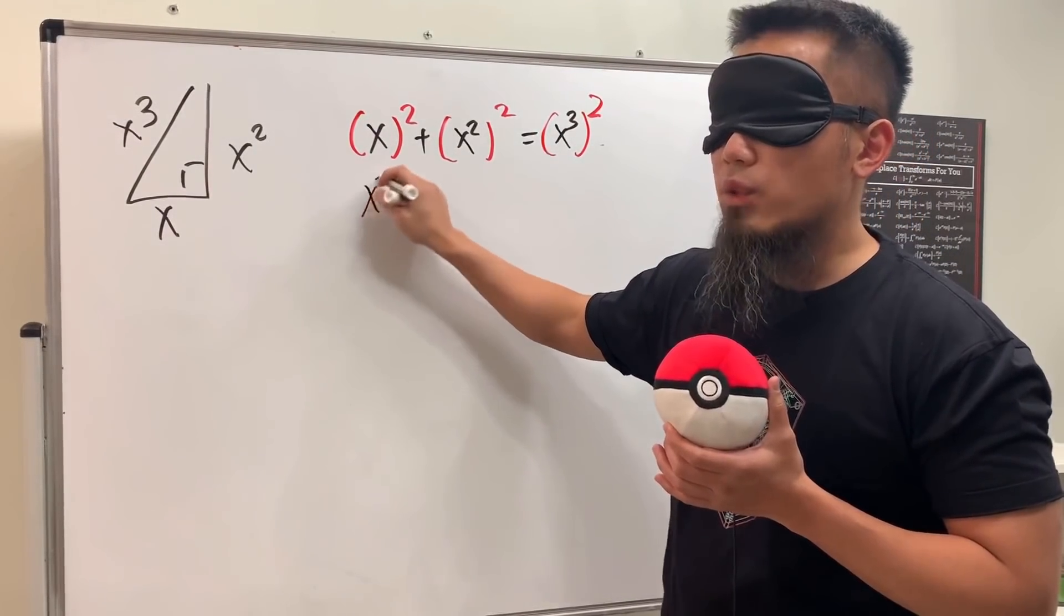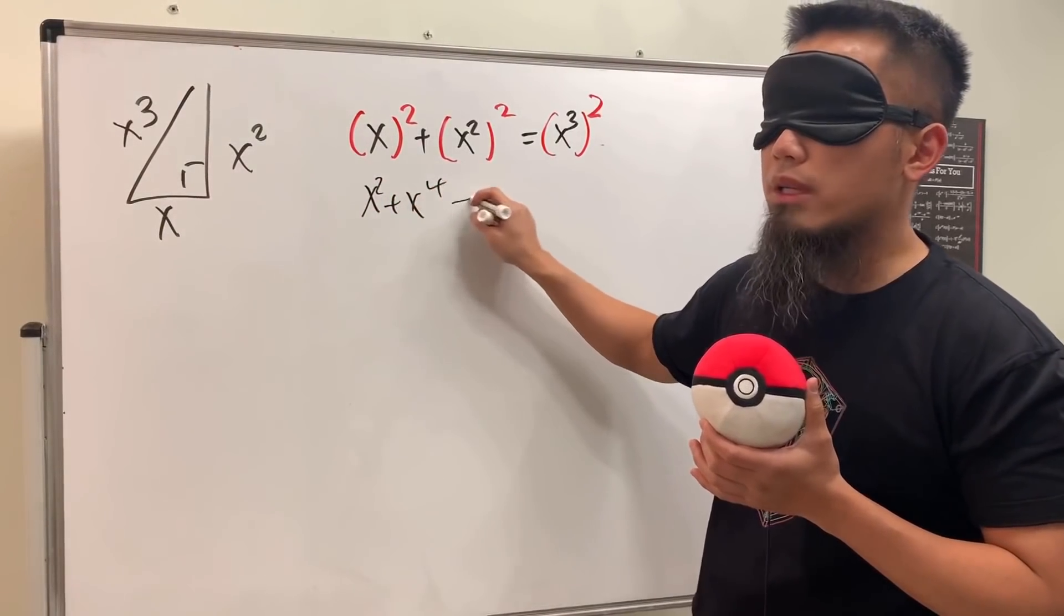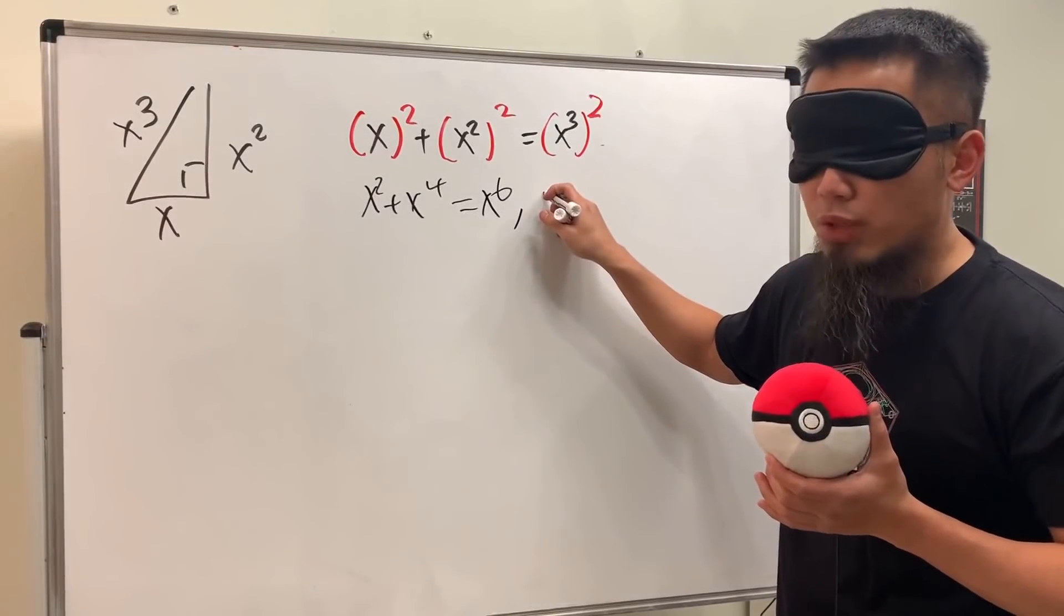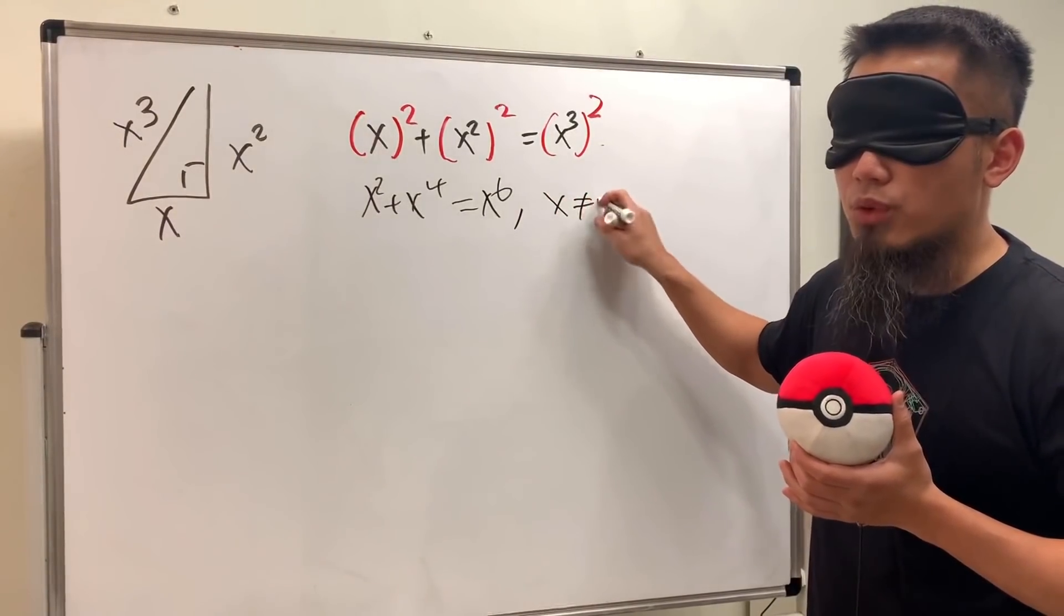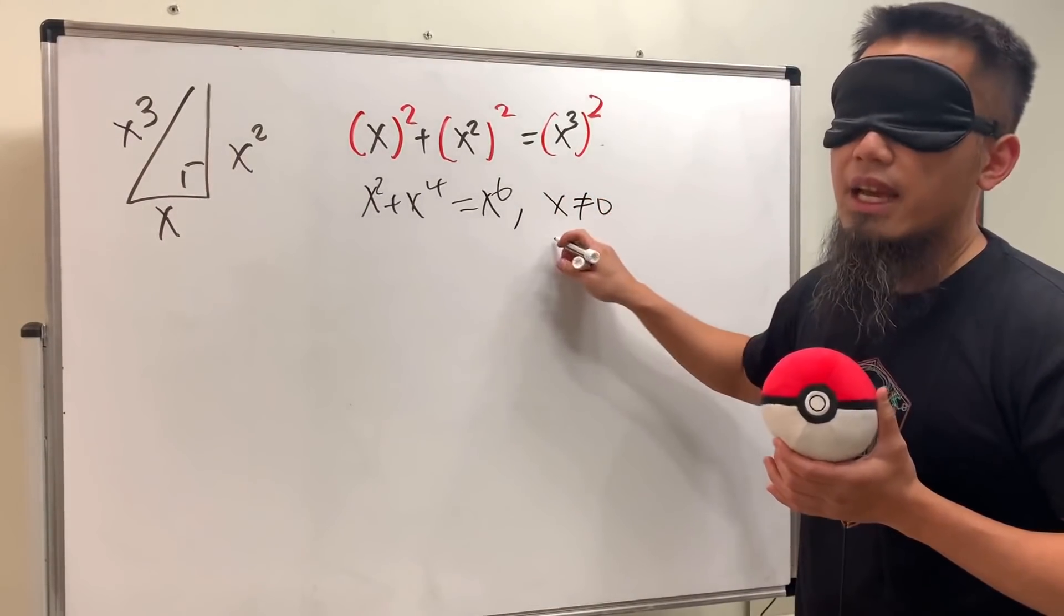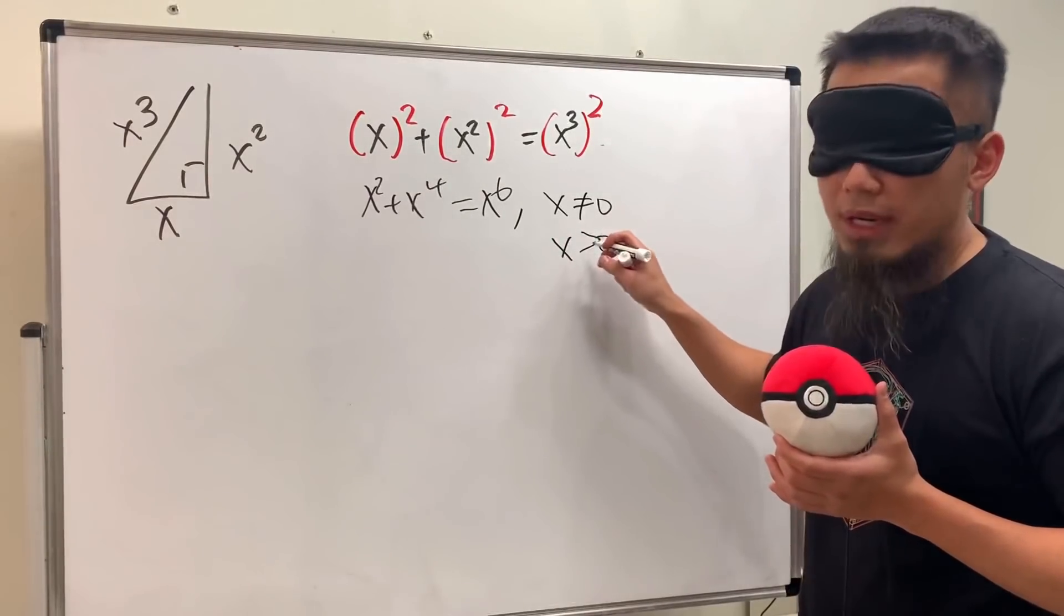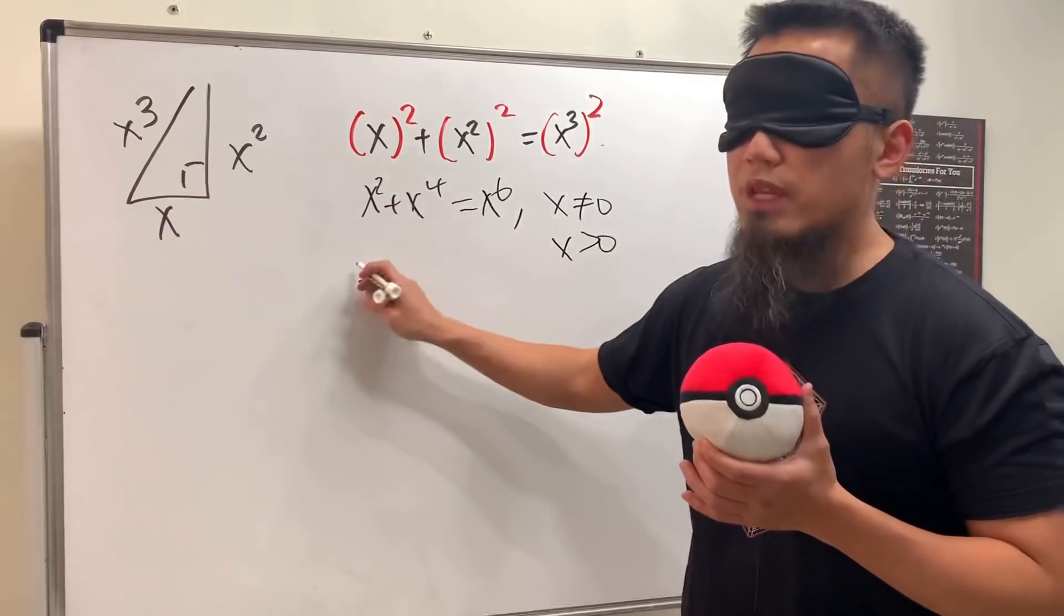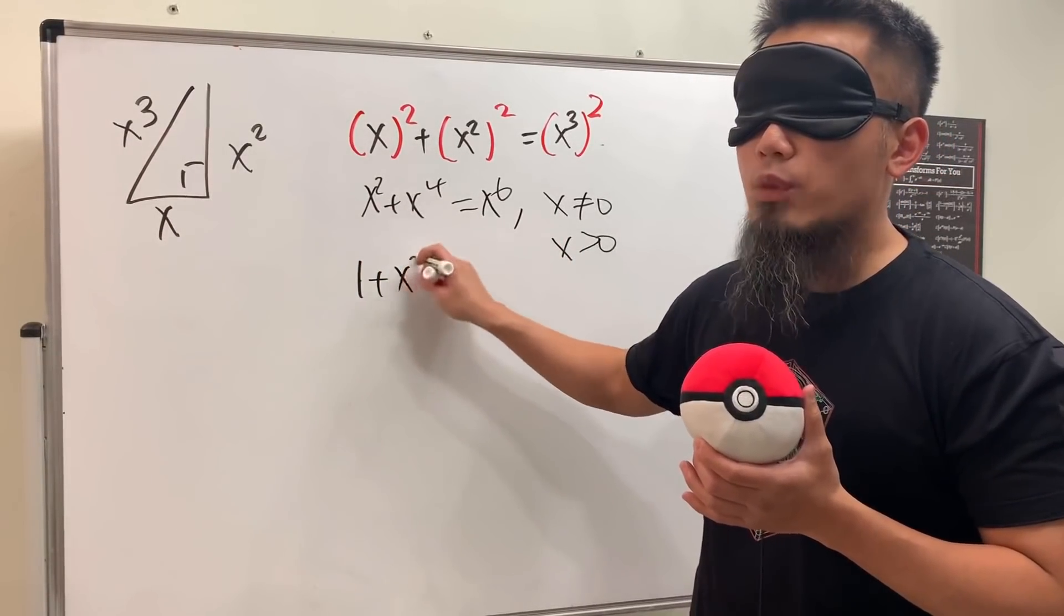With that being said, we just get x squared plus x to the fourth power that's equal to x to the sixth power. And notice that because we want a triangle, x cannot be zero, otherwise you just get a dot, and we want x to be greater than zero. So keep that in mind. With that being said, we can just divide everything by x squared, so we end up with 1 plus x squared that's equal to x to the fourth power.